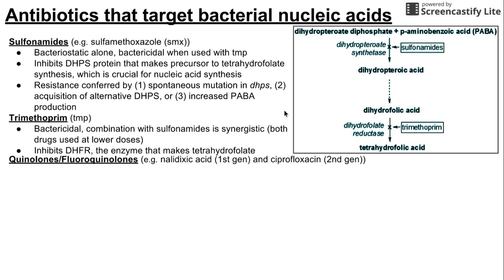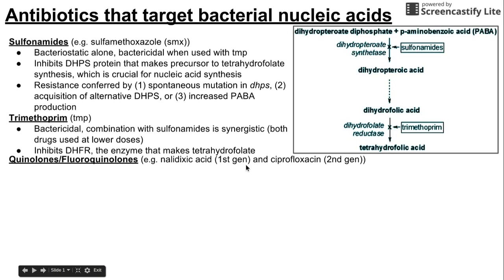These are different antibiotics now, different classes not related to the dihydrofolate pathway. The first we want to talk about is quinolones, or fluoroquinolones. One example of a first-generation quinolone is nalidixic acid, and one of the newer ones is ciprofloxacin, which is a second-generation fluoroquinolone.